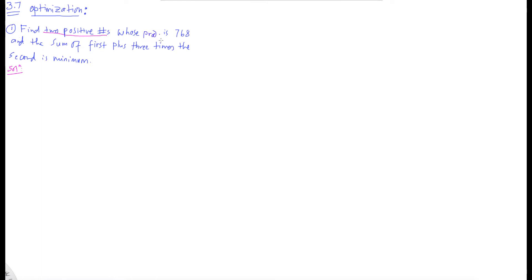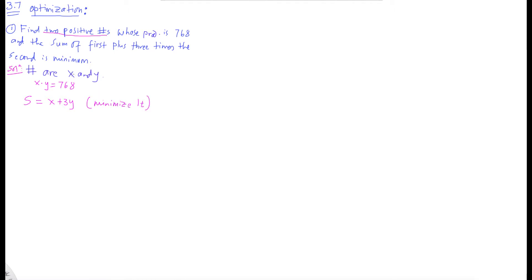Example 1: Find two positive numbers whose product is 768, and the sum of the first number plus three times the second number is minimum. Let the numbers be x and y. The product gives us x times y equals 768, and we want to minimize the sum S equals x plus 3y.